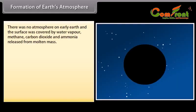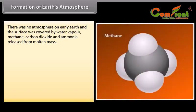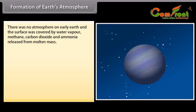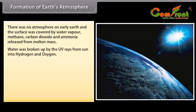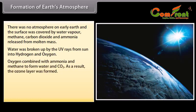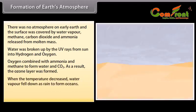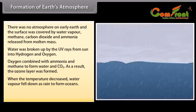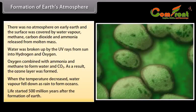Formation of Earth's Atmosphere. There was no atmosphere on early Earth. The surface of Earth was covered by water vapor, methane, carbon dioxide and ammonia released from molten mass. Water was broken up by UV rays from the sun into hydrogen and oxygen. Oxygen combined with ammonia and methane to form water and CO2. As a result, the ozone layer was formed. When the temperature decreased, water vapor fell down as rain to form oceans. Life started 500 million years after the formation of Earth.